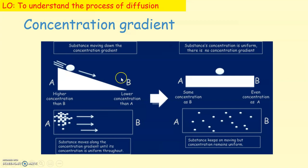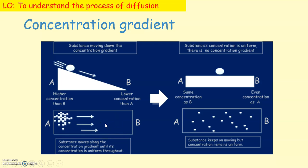If the concentration is high on one side and low on the other, particles will move faster when the difference in concentration is large compared to when it is small. If concentration is high here and there are no particles on the other side, diffusion will be faster than if some particles are already present there. Diffusion continues until the particles are evenly distributed.